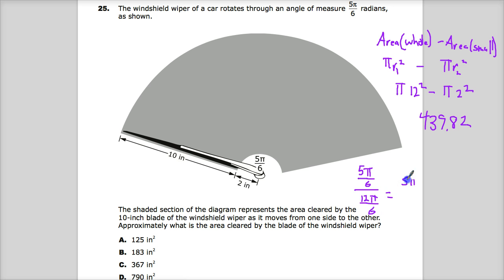So 5π/6 divided by 12π/6. Good old keep it, flip it, switch it. Cancel, cancel, cancel, cancel, cancel. 439.82 times 5/12. Actually, I should write that in a different spot if I'm going to be even remotely accurate. Area of shaded times 5/12. 439.82 times 5/12. And you get your final answer of 183.25. Same exact thing.